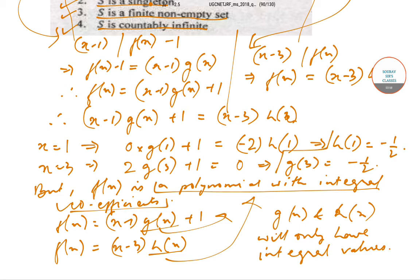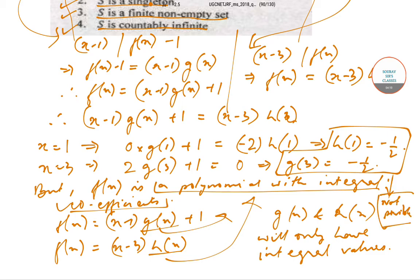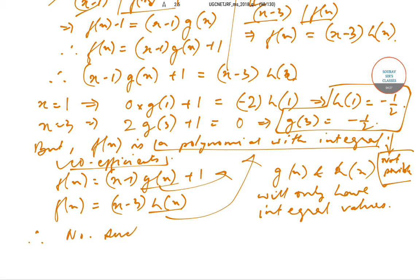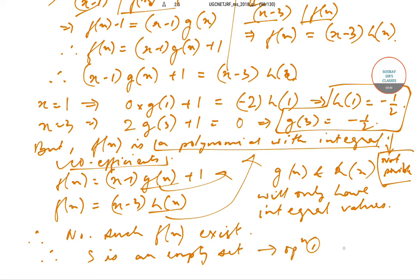We will only have integral values, but we have found out that h(1) and g(3) are equal to minus 1/2. This is not possible — not possible. So that implies there exists no such polynomial satisfying both conditions. Therefore no such f(x) exists, and that means S is an empty set. And that implies that option 1 is correct; the other options are all incorrect.